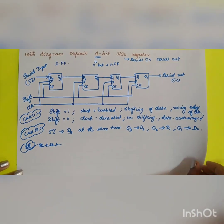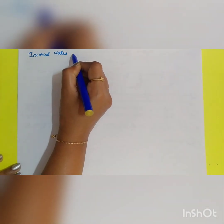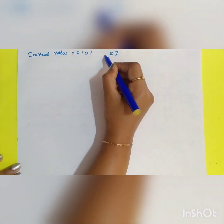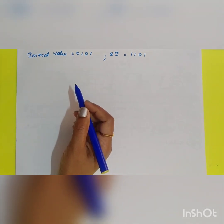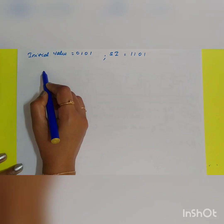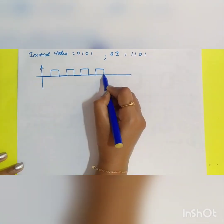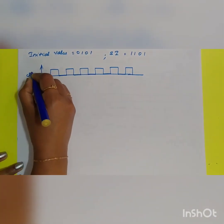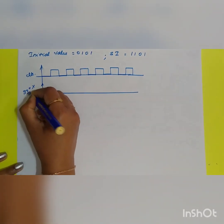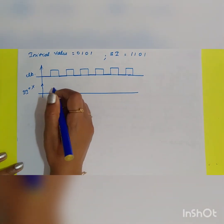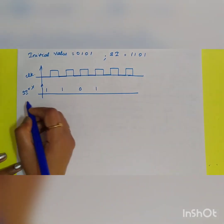Let us take an example. Assume the initial value of the register is 0101 and the serial input to be applied is 1, 1, 0, 1 in order. We will now derive the timing diagram. First, draw the clock signal — it is activated during the rising edge. Then draw the Serial In waveform: 1, 1, 0, 1.